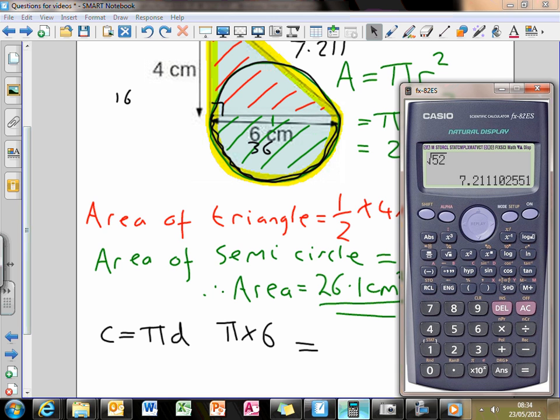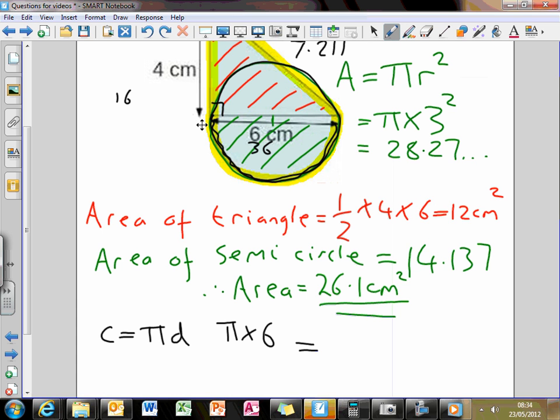pi times 6, and what I need to do to find that semicircle is I must divide it by 2, okay? So I get 9.42, so this distance from here, round to here, is 9.42 centimeters.